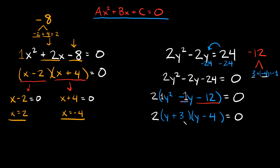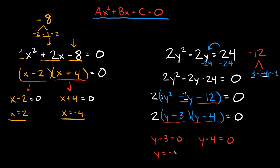Now that it's completely factored, take each parenthesis and set it equal to zero: y + 3 = 0 and y - 4 = 0. Solving, y = -3 and y = 4. Both of these are your answers.